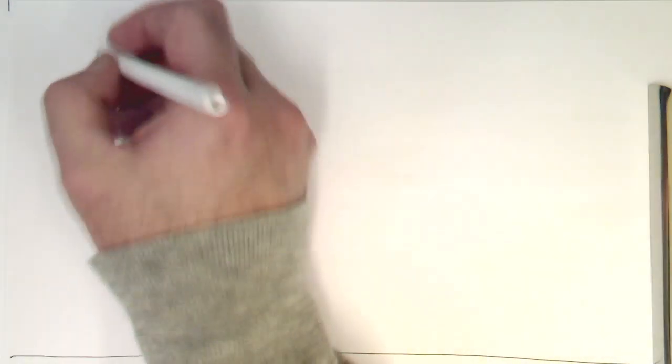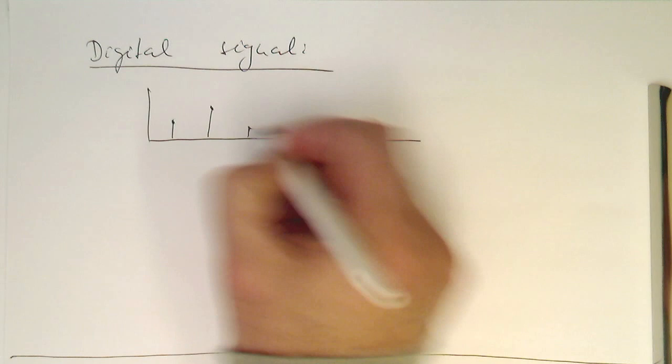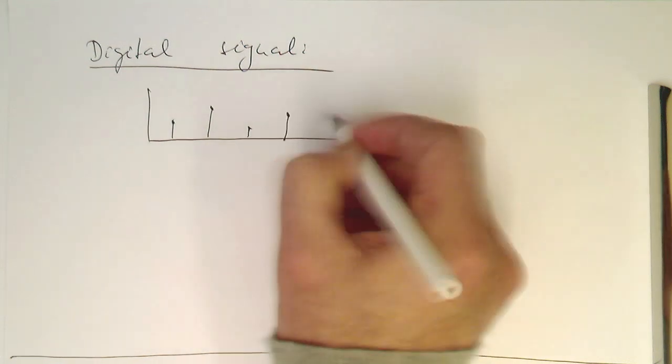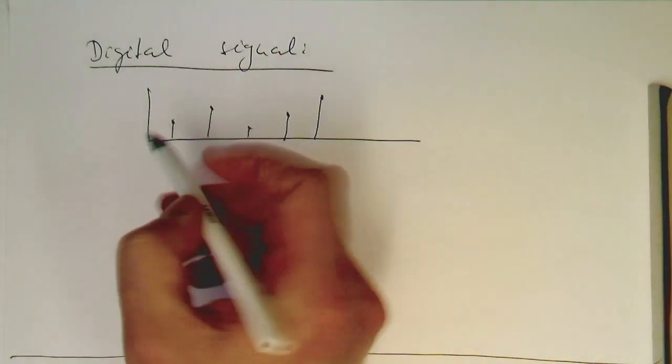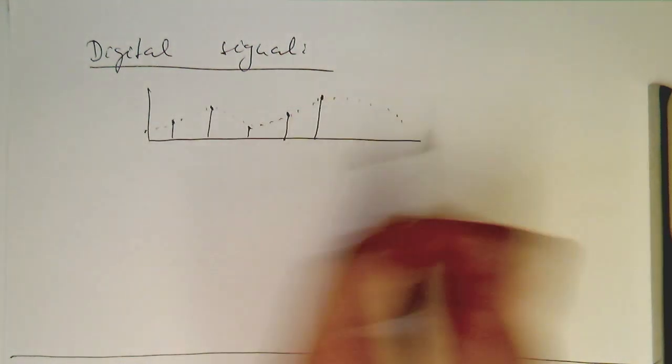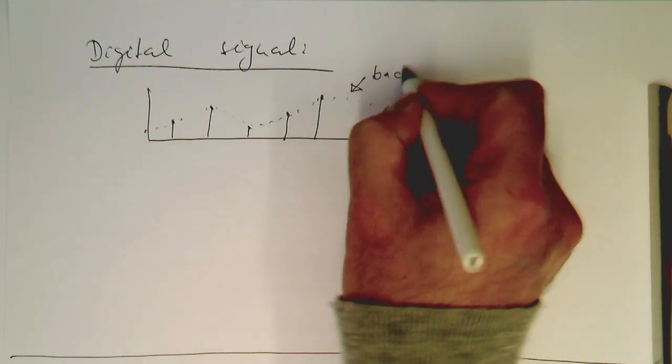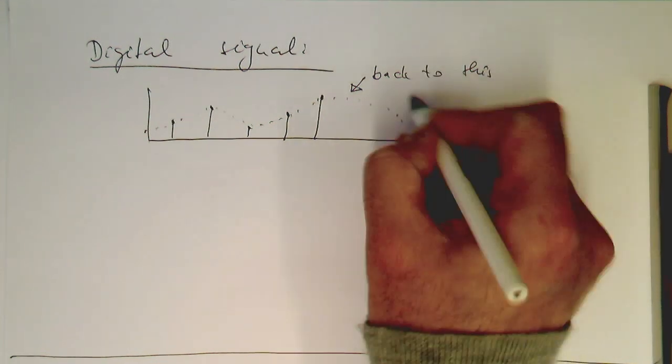So how can we reconstruct our original signal? Remember our digital signal? It's just a sequence of different pulses. Something like that, which represents our signal. And the original signal was probably more something like this. So we would like to basically come back to this analog signal.